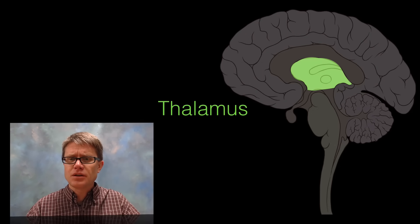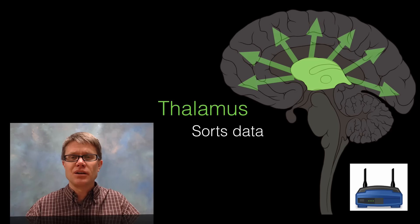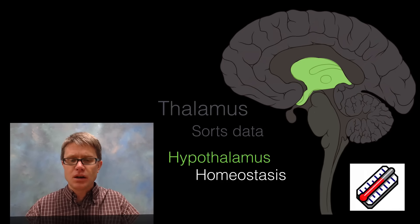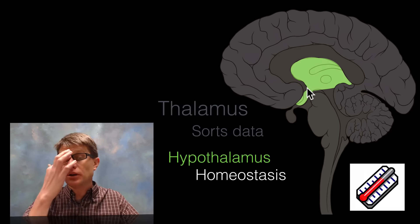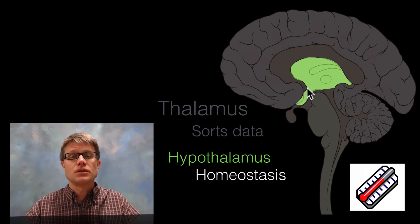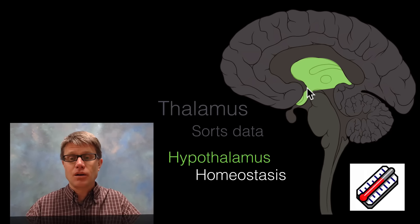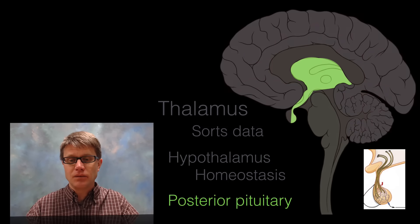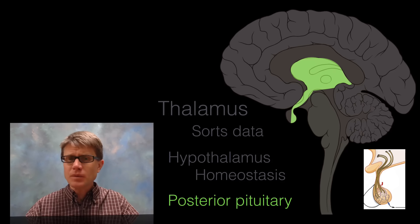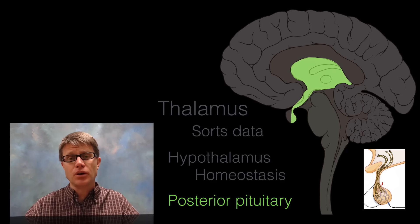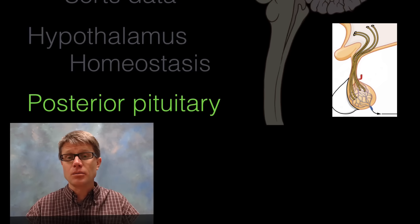Moving up we have the thalamus, which sits right on top of the brain stem. The best analogy is a router — it's sorting data and sending it where it needs to go. Below that is a little but incredibly important structure called the hypothalamus, located right above the roof of your mouth. It's responsible for homeostasis: maintaining body temperature, osmolarity, and is also important in circadian rhythms. Hanging off the bottom of that is the pituitary gland — the posterior pituitary is technically part of the brain — and it sends out hormones like antidiuretic hormone, which keeps your water balance stable, and oxytocin.